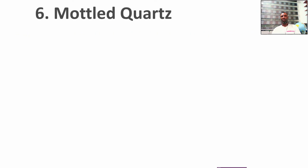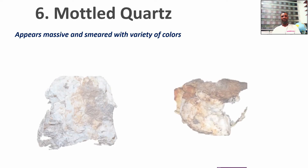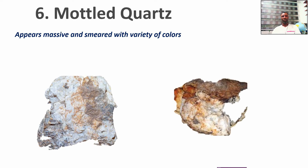Another variety is multi-colored quartz. When you see a quartz that is smeared with a variety of different colors, you need to actually pick such quartz and test it when you are doing your float mapping. It's very important. You can see them in different varieties of colors. From visits to different gold mines around Nigeria, this is also an interesting kind of quartz showing signs of gold.